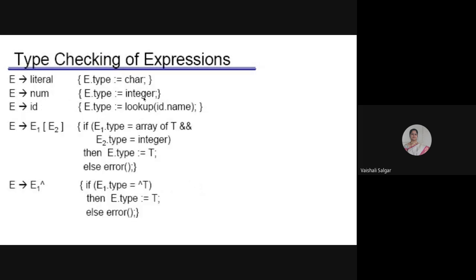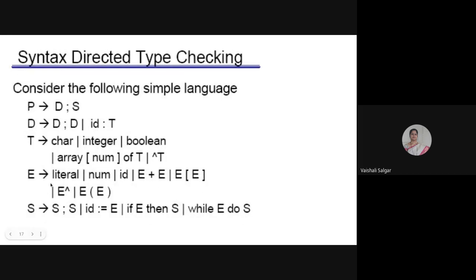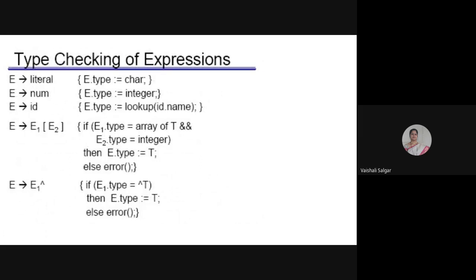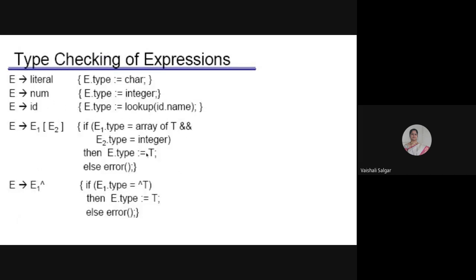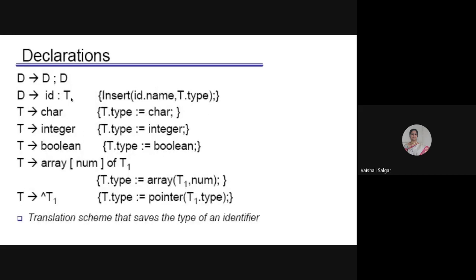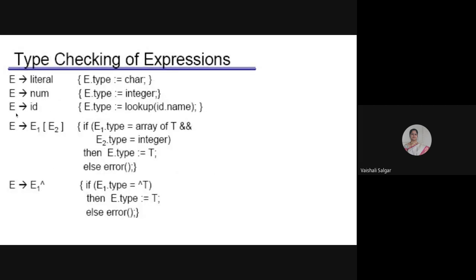For type checking of expressions: if E is a literal, its type is character; if E is a number, its type is integer; if E is an identifier, its type is looked up from the declaration in the lookup table. For arrays and pointers, the same lookup mechanism applies. So when checking 'x = y', x's type is already declared and y's type is looked up and assigned, recording the identifier's type in the lookup table.